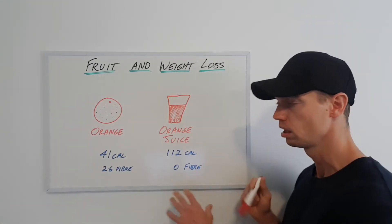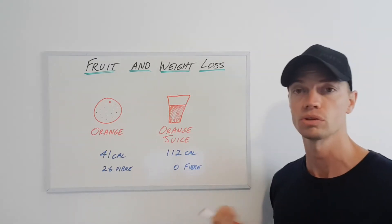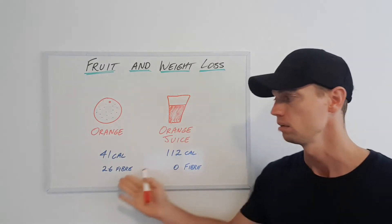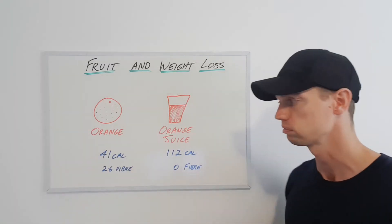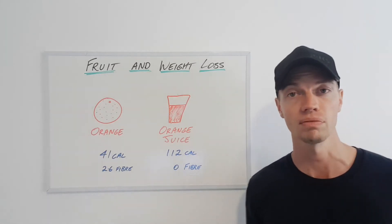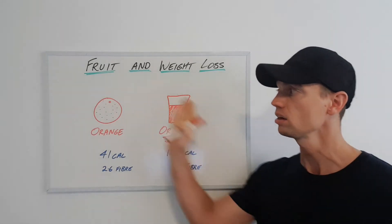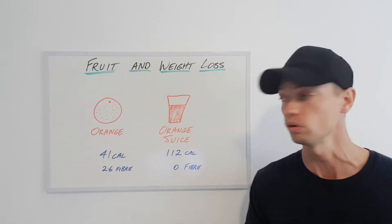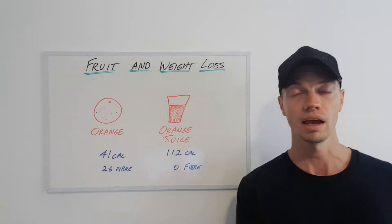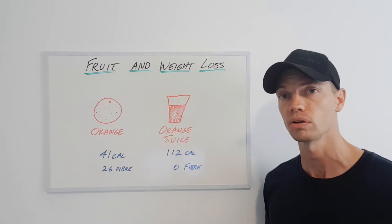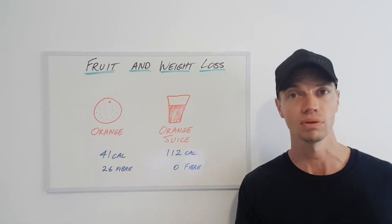And so considering that for me per day I need close to about 40 grams of fiber, that's well on the way of giving me a good amount of my fiber content, right? So in that case eating a whole orange can be really good. It's low in calories and it's contributing to my fiber content for the day and it's keeping me fuller for longer.